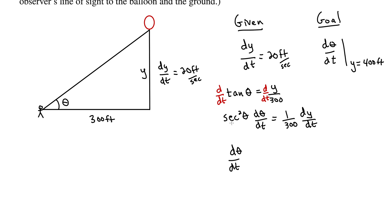If secant squared is 1 over cosine squared, I can multiply up by cos squared. So we have d theta dt is cos squared theta over 300 times dy dt, which is 20. We're interested in it at a specific instant in time when Y equals 400.